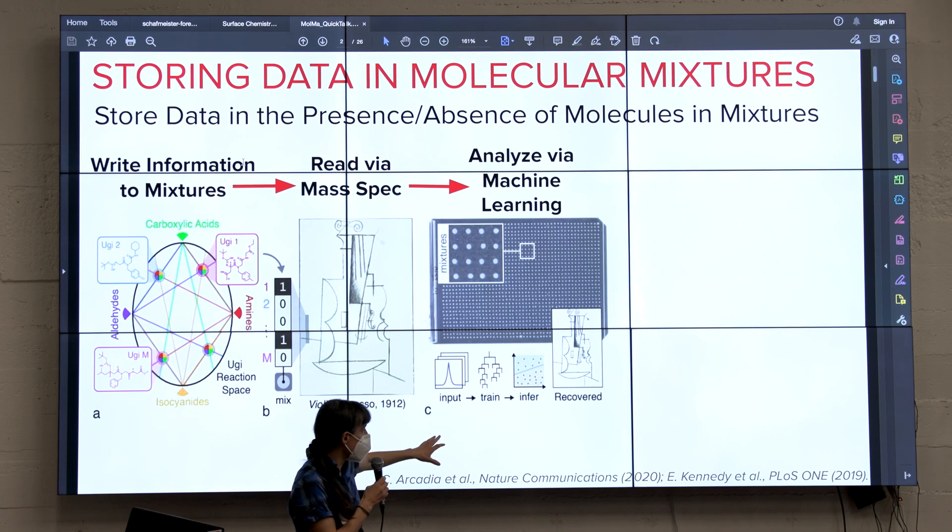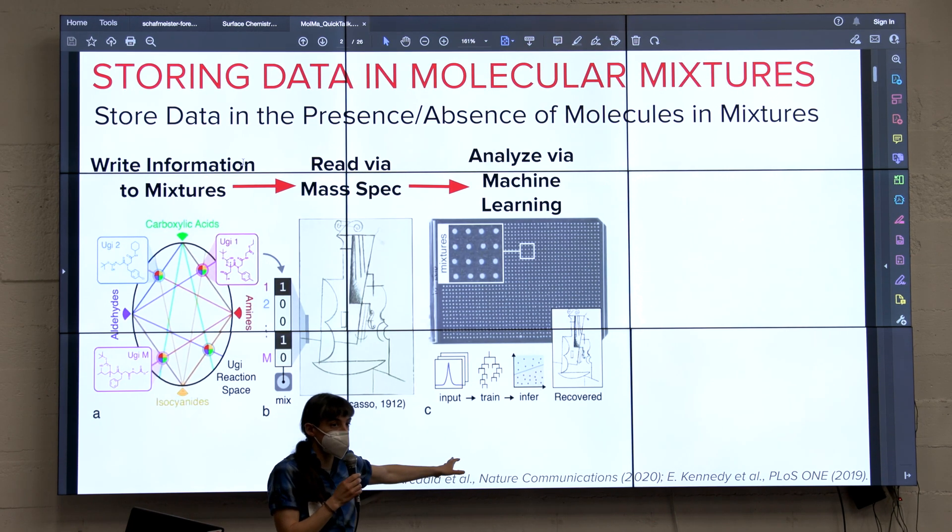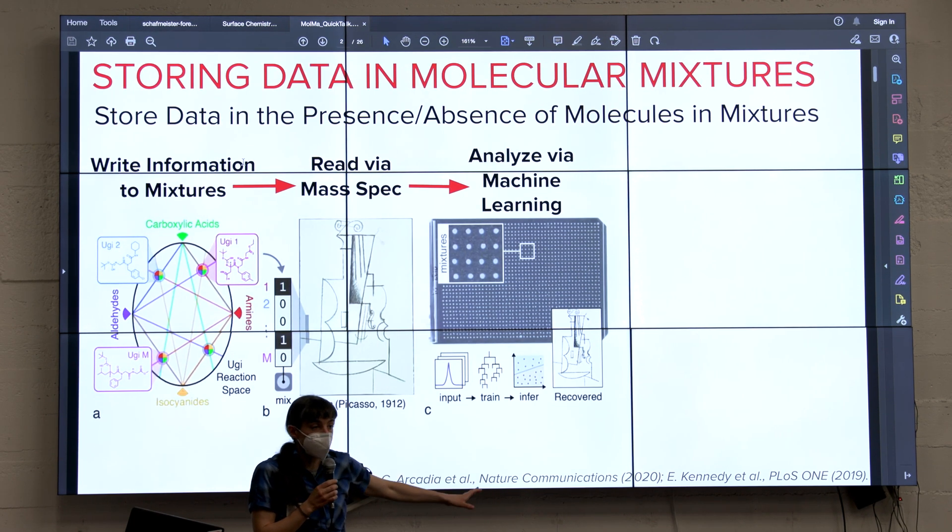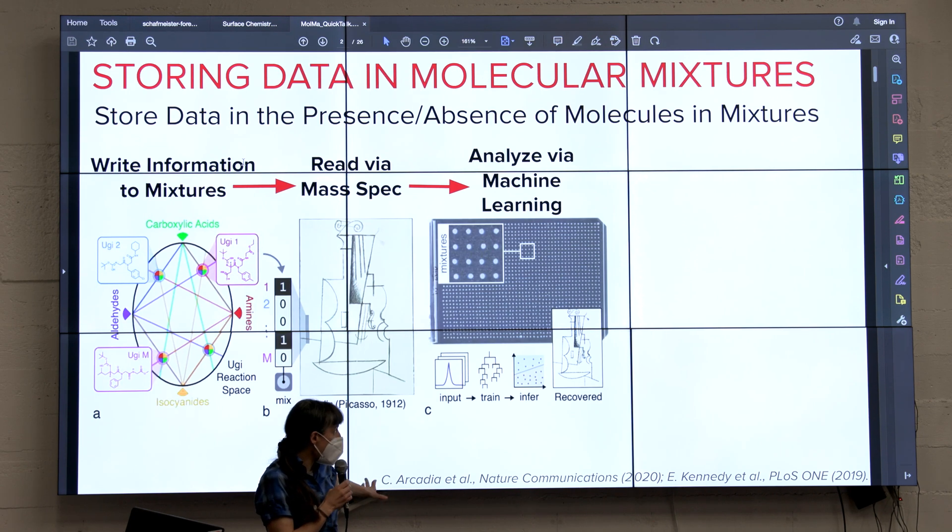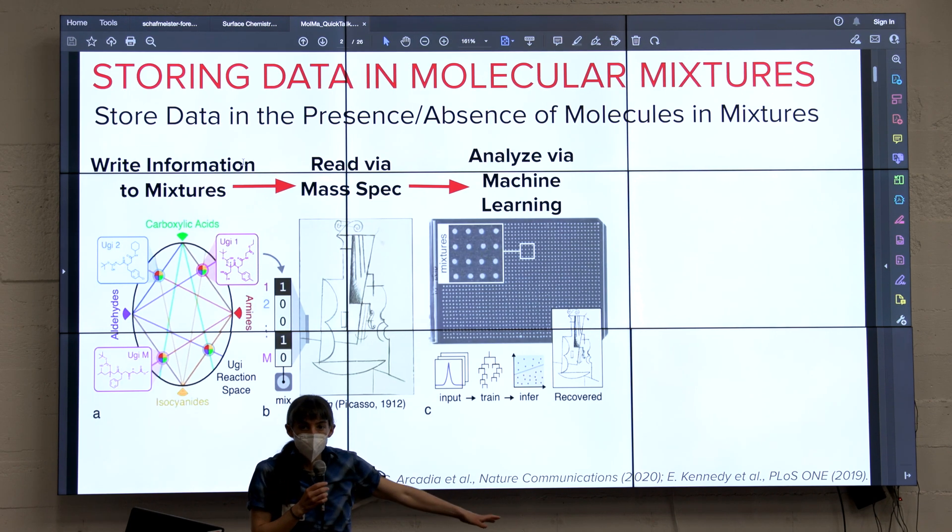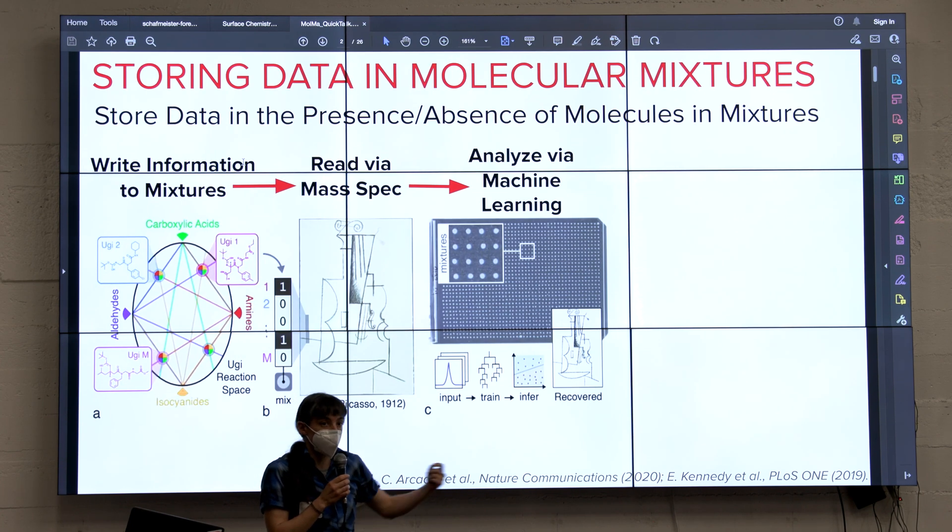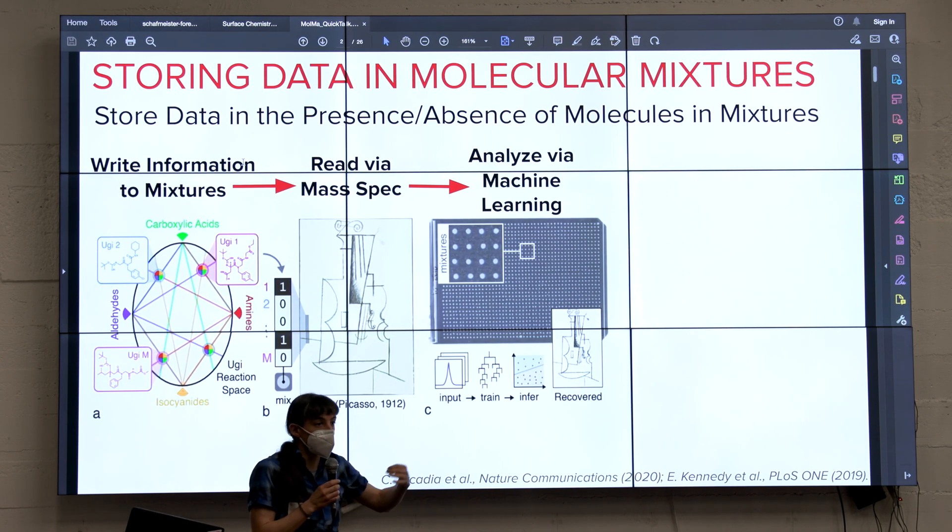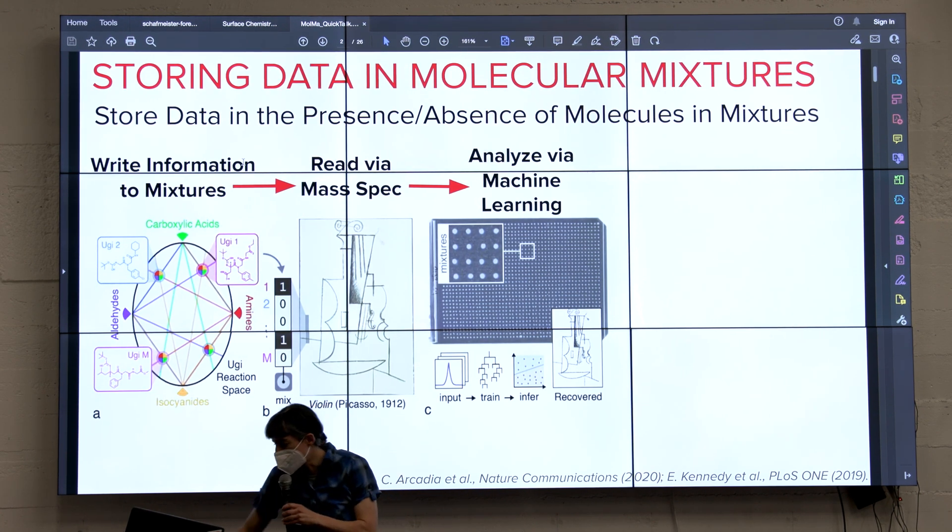You can read out that information using various chemical techniques. We chose mass spectrometry because it's extremely versatile. We were able to show that you can get around using DNA. Why would you want to get around using DNA? Maybe you want to source your molecules from different places and not rely exclusively on DNA. We can do that and still store large amounts of information.